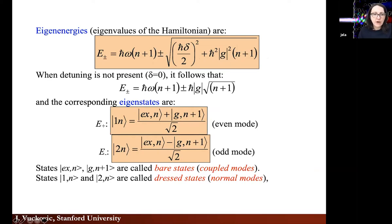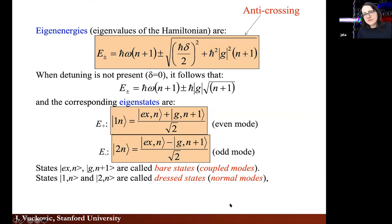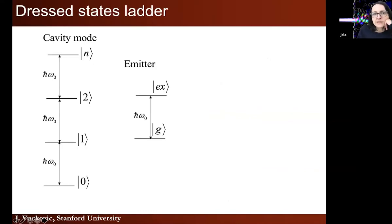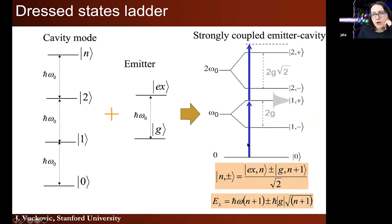Briefly summarizing: to find Rabi oscillations, we solve the time-dependent Schrödinger equation with the Jaynes-Cummings Hamiltonian and expand the wave function in terms of eigenstates of the original system with no coupling between light and matter. We found that the probabilities of the system being in the excited state of the atom with n photons, or ground state with n+1 photons, follows oscillation with frequency 2g√(n+1), where n is the initial number of photons and g is the coupling strength.